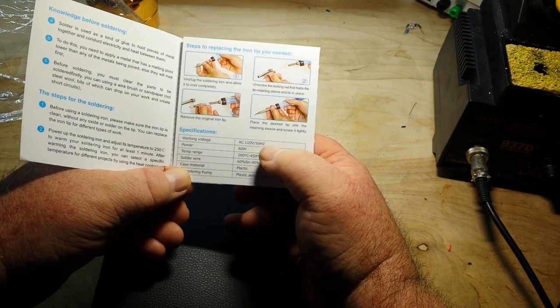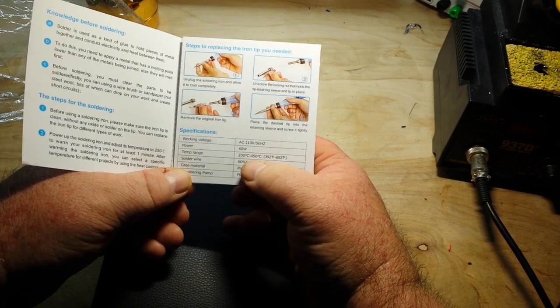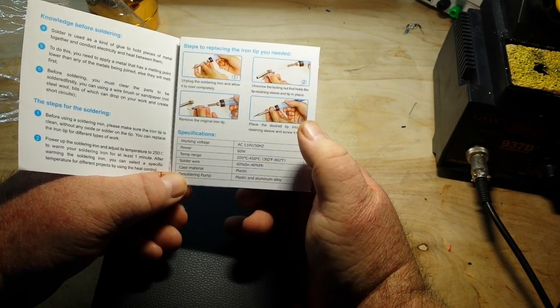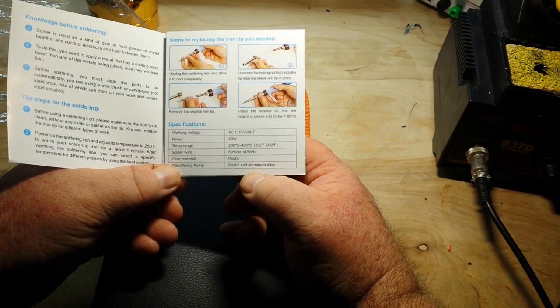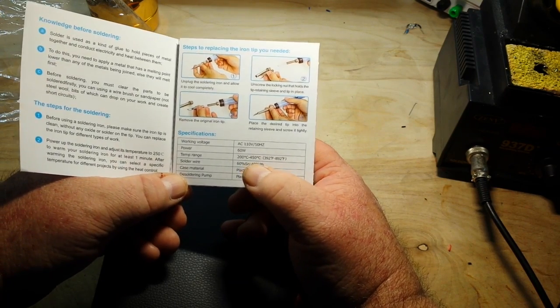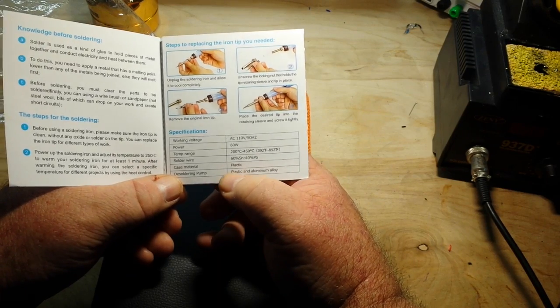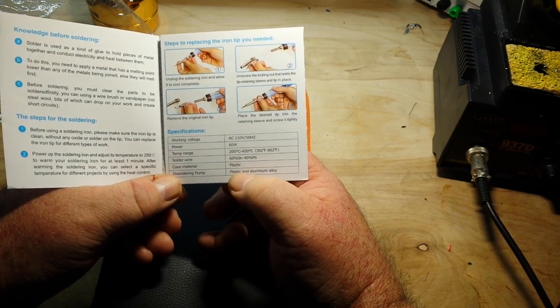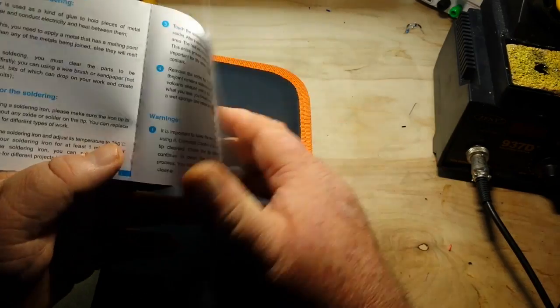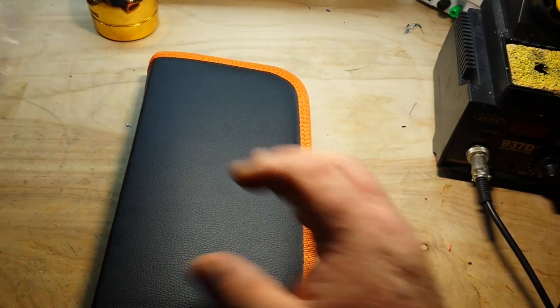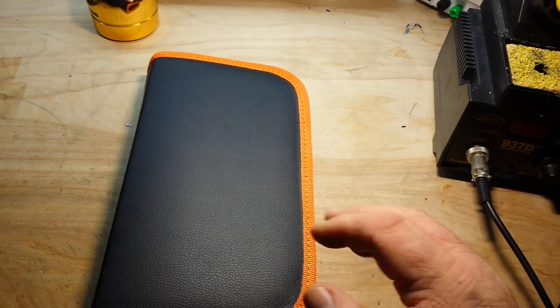You can see we're at 110 volts, 60 watts. Temp range: 200 to 450°C—that's 392 to 892°F for the only country to put a man on the moon. That's a joke, by the way. Case material: plastic. Comes with a desoldering pump—I did not know that.